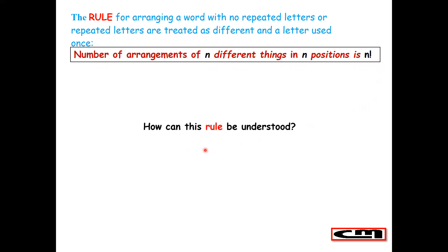Now I'm going into detail so that you understand why we say n factorial. I will start explaining so that we end up concluding that as long as we have n different things arranging them in n positions, we can do that in n factorial ways.